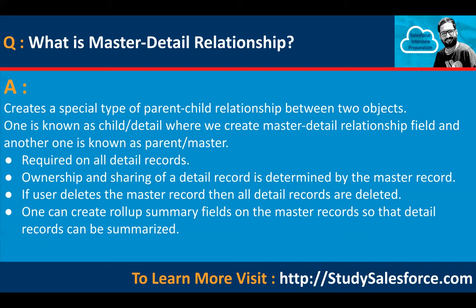What is master-detail relationship? It creates a special type of parent-child relationship between two objects — one is known as the child or detail, where the master-detail relationship field is created, and the other is known as the parent or master. In master-detail, the field is required on all detail records — all child records must be linked to at least one parent record — whereas in lookup it is optional. Ownership and sharing of a detail record is determined by the master record. If a user deletes the master record, all detail records are deleted.